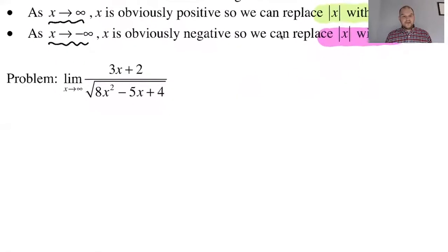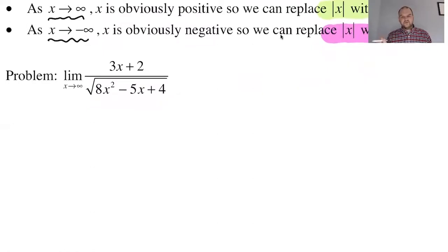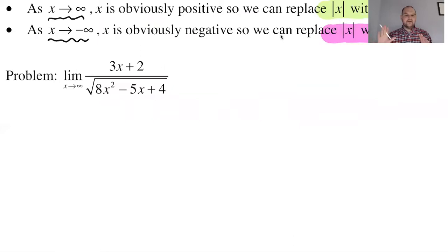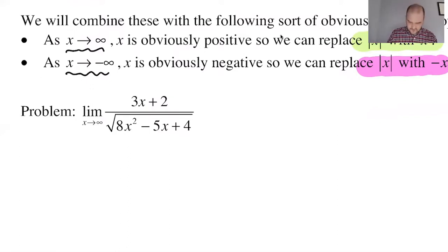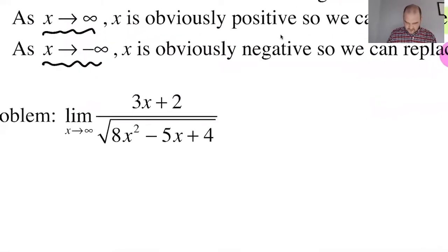We want to find the limit as x approaches infinity of (3x + 2) over the radical of (8x² − 5x + 4). This is a technique you use when combining limits with radicals — go back and review the page where we factored the highest logical power of x out of a radical. I'm going to factor out the highest logical power of x from the radical.